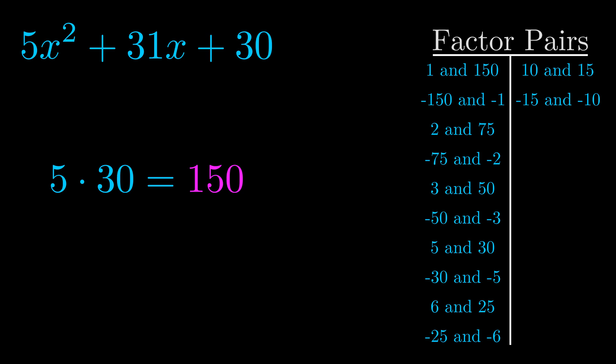The b value is the coefficient on the x term. That's the middle term, the one that we haven't done anything with yet. And really this is the only factor pair that we need.